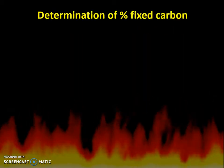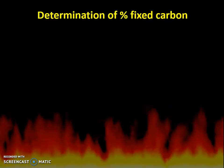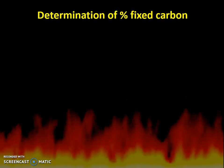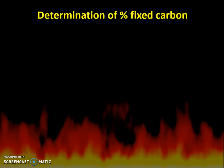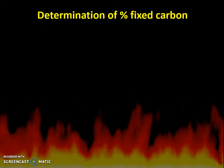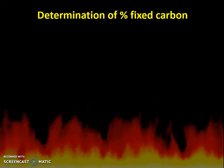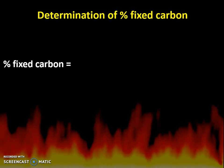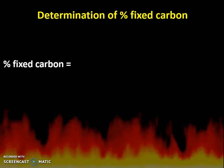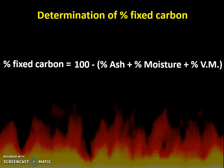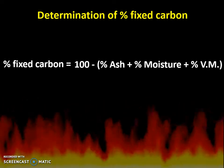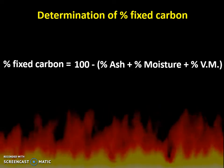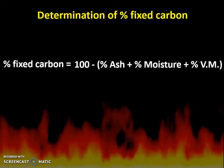For determination of percentage fixed carbon: fixed carbon is the carbon which provides actual heat or calorific value to the fuel. The formula is very simple — percentage fixed carbon equals 100 minus (percentage ash plus percentage moisture plus percentage volatile matter).